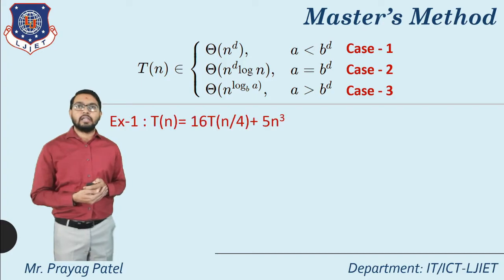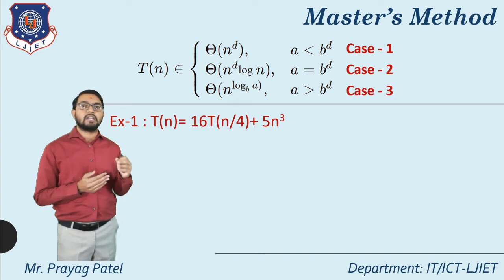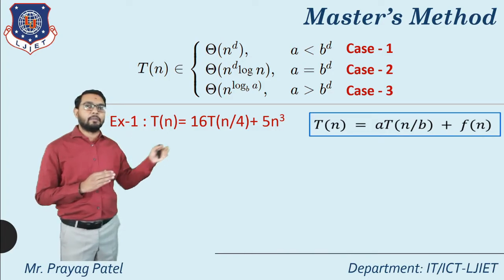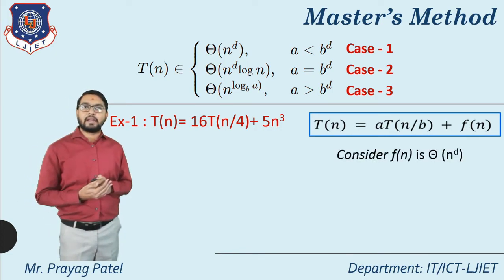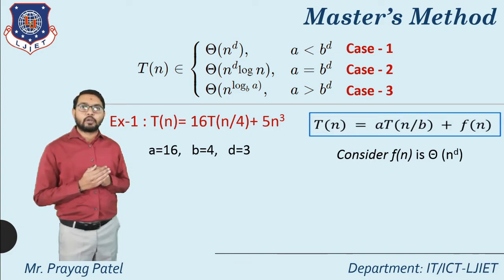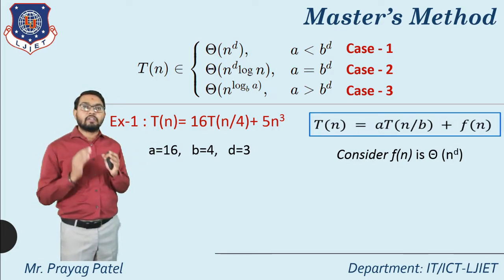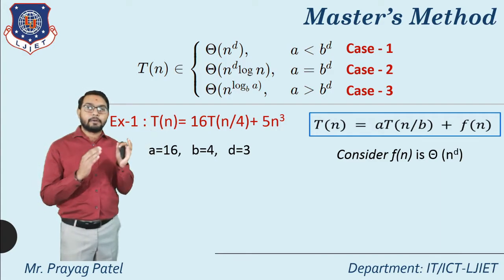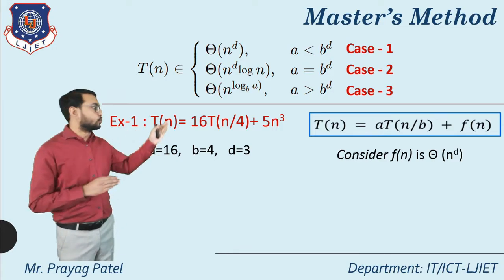Example 1: T(n) = 16T(n/4) + 5n³. Comparing with T(n) = aT(n/b) + f(n), we get a = 16, b = 4. Since f(n) = 5n³ = Θ(n^d), the power of n gives us d = 3.